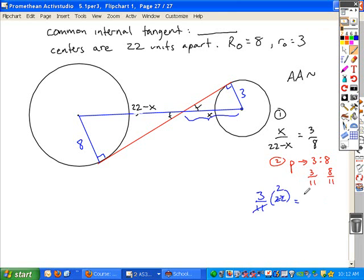And what is 3 elevenths of 22? 11 goes into 22 twice, you get 6. Which means what's going to be left for this larger portion? 22 minus 6, which is? Is that going to also be true of 8 elevenths of the whole thing? Yeah, 8 times 2 gives you 16. So you can confirm that those are your numbers.